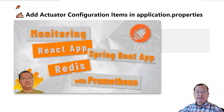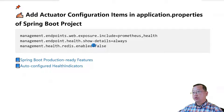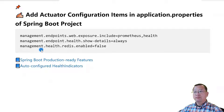The video 'Monitoring React App, Spring Boot App, and Redis with Prometheus' has deep detail on how to monitor a Spring Boot app with Prometheus. The next configuration item: management.endpoints.health.show-detail, value is always — that means show the detail in the API response. Third configuration item: management.health.redis.enabled, value is false.